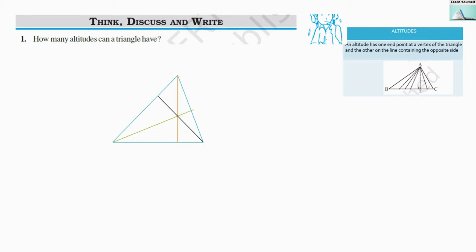The first question is: how many altitudes can a triangle have? Here I have shown triangle ABC with three altitudes. For vertex A, AE is an altitude. For vertex B, BG is an altitude. For vertex C, CD is an altitude. So a triangle has three altitudes. Our answer is three.